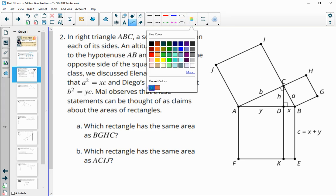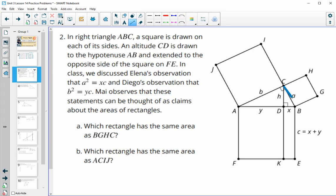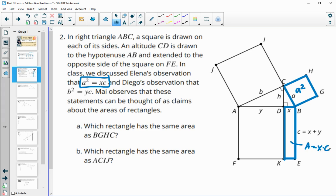Which rectangle has the same area as BGHC? So this side length is A, so then this square here has side lengths of A, so the area would be A squared. We see that Elena said A squared is equal to X times C. So which rectangle is that? Here's an X and here's side length C, so this rectangle's area would be XC. So these two blue rectangles would have the same area, so BEKD for this one.